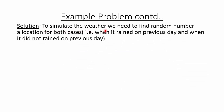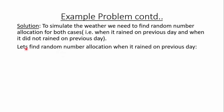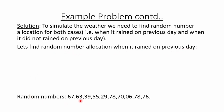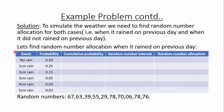To simulate the weather we need to find the random number allocation for both cases — when it rained the previous day and when it did not. For the case when it rained on the previous day, we draw a table with the events and their corresponding probabilities from the problem, then calculate the cumulative probability and determine the random number interval.